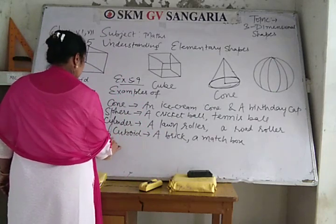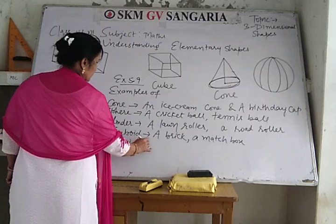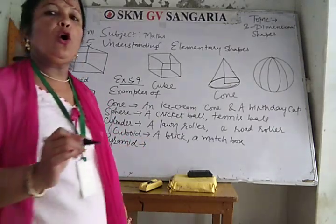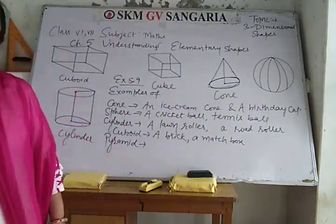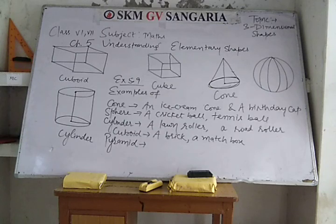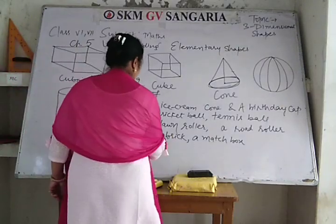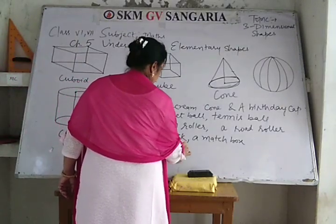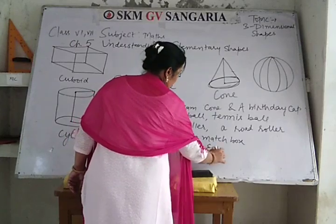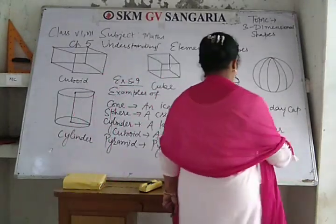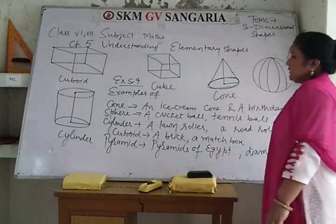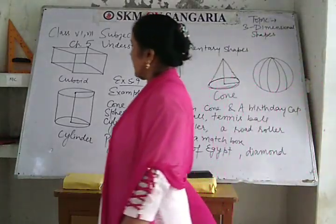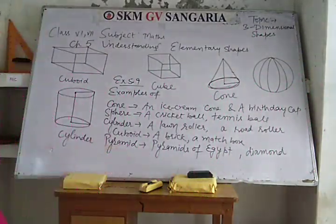Then for pyramid — the pyramids of Egypt and a diamond are examples of a pyramid shape. You can write different examples also.